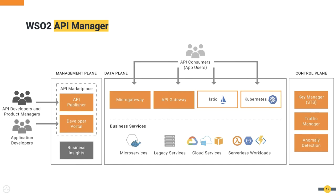These components can all run within the same JVM in an all-in-one deployment mode, or be partially or fully distributed as traffic scales. Typically the gateways scale first, then the key manager and traffic manager. Different deployment patterns are documented thoroughly. The product supports Kubernetes and Istio service mesh. The data plane consists of the gateways; the management plane covers the publisher and developer portal, which together create an API marketplace. The control plane includes a key manager acting as a secure token service, a traffic manager for throttling and rate limiting, and an analytics module.